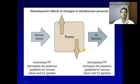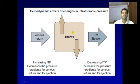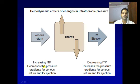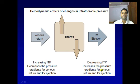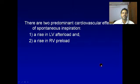The hemodynamic effects of changes in intrathoracic pressure: this side shows venous return, this is thoracic pressure, and this is LV ejection. When there is a rise in thoracic pressure, the increase in intrathoracic pressure decreases the pressure gradients for venous return and left ventricular ejection. When intrathoracic pressure decreases, it increases the pressure gradient for venous return and LV ejection.